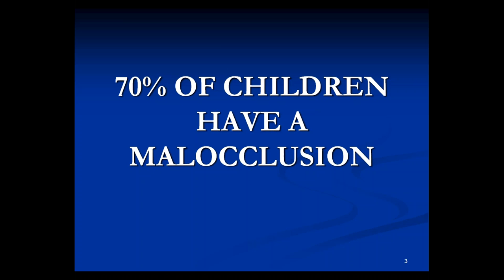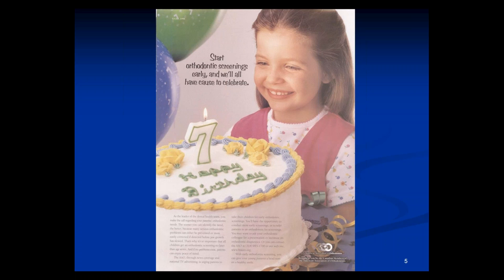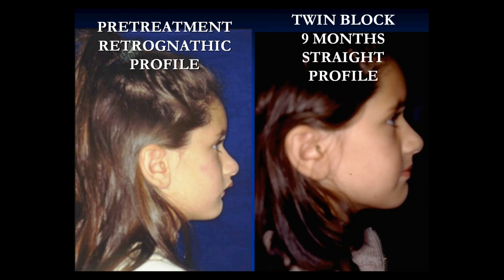70% of children have a malocclusion — that's a huge number, and almost every mother wants their children treated early. Here's a slide showing a retrognathic profile on the left and a straight profile on the right. That was done with a functional appliance — I'll show you how to move the jaw forward. It took seven months, no surgery. And that's another pre-treatment photo — you can see quite a change in the profile in nine months using a twin block. Tremendous profile change. Don't you think you change the patient's self-esteem when you change the facial profile?